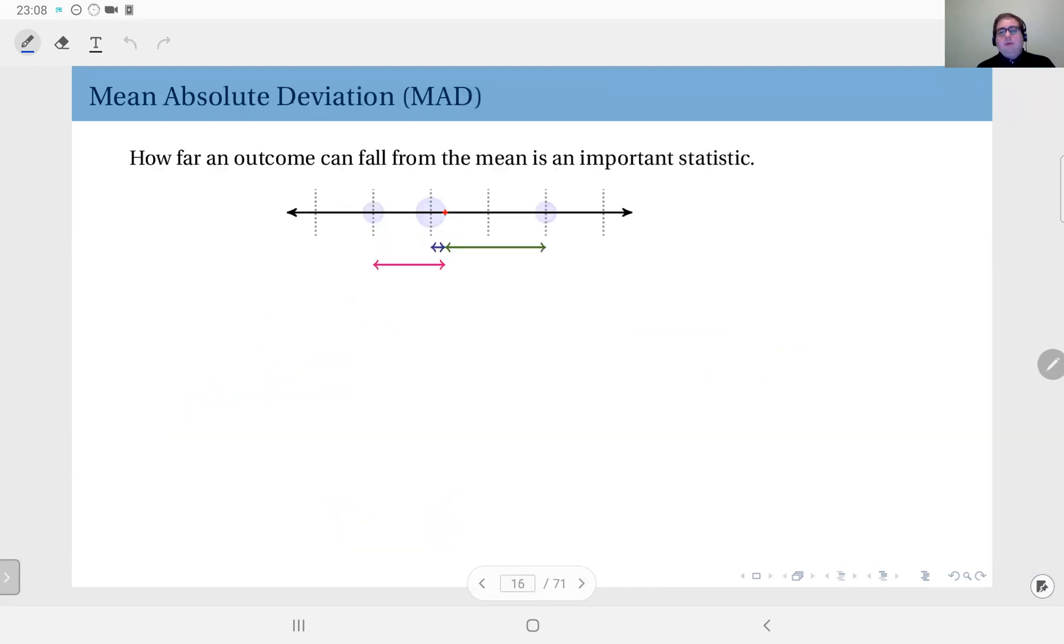So that was an important statistic where you actually find the value around which the distribution is distributed - you find the center of mass. But how far an outcome can fall from the mean is another important statistic.